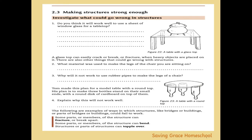Making sure structures are strong enough requires applying the right materials and concepts. For example: a table with a glass top — if you put a very heavy pot on top of it, the glass is likely to crack or break. The structure fails, the pot falls, and you no longer have a table. It's not the best design.